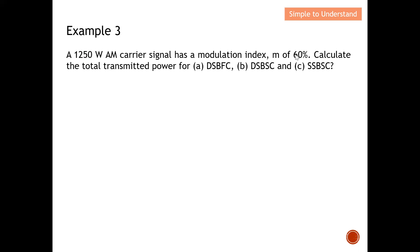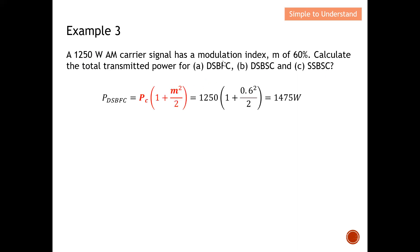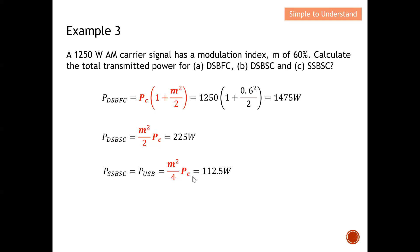Example 3: A 1250-watt AM carrier signal has a modulation index m of 0.6. Calculate the total transmit power for three cases: double sideband full carrier, double sideband suppressed carrier, and single sideband suppressed carrier. For DSB-FC, substituting into the equation gives a total transmitted power of 1475 watts. For DSB-SC, using the corresponding equation gives a total power of 225 watts. For SSB-SC, applying its formula gives the remaining total power value.